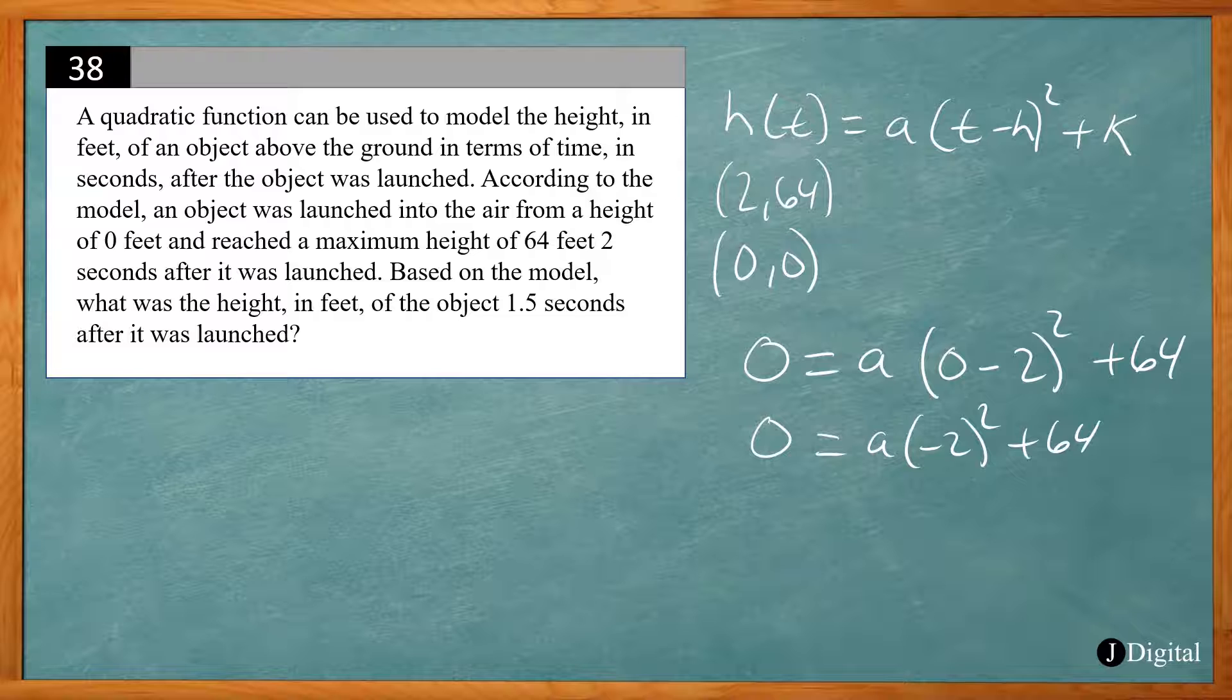So we get 0 equals a times (-2)² plus 64. Negative 2 squared is 4, so we have 4a plus 64. We want to subtract 64 from both sides, which gives me -4a equals 64, divide by -4 on both sides, a equals negative 16. Okay, so we can solve for a, we got negative 16.